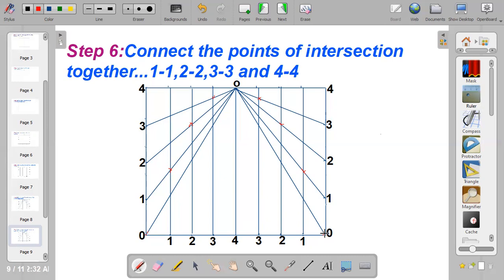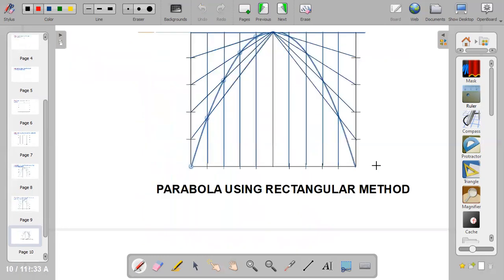Okay, the next thing since we have gotten the points of intersections, the next thing is just to connect all the points together and that gives you the required parabola. Thank you.